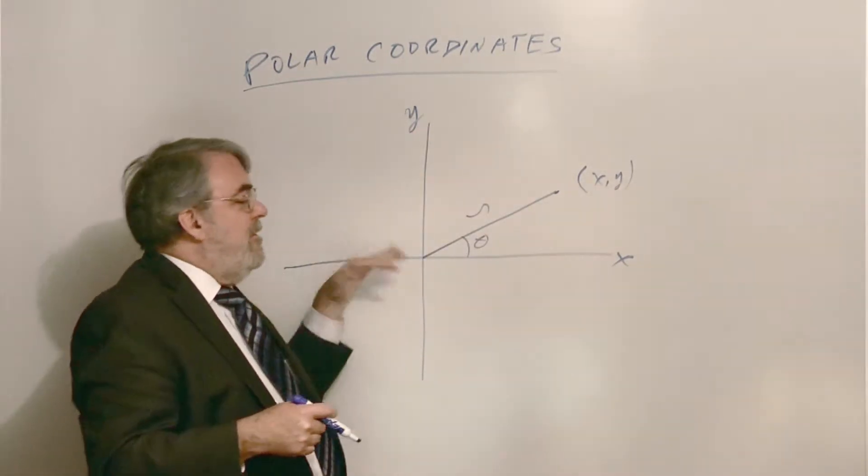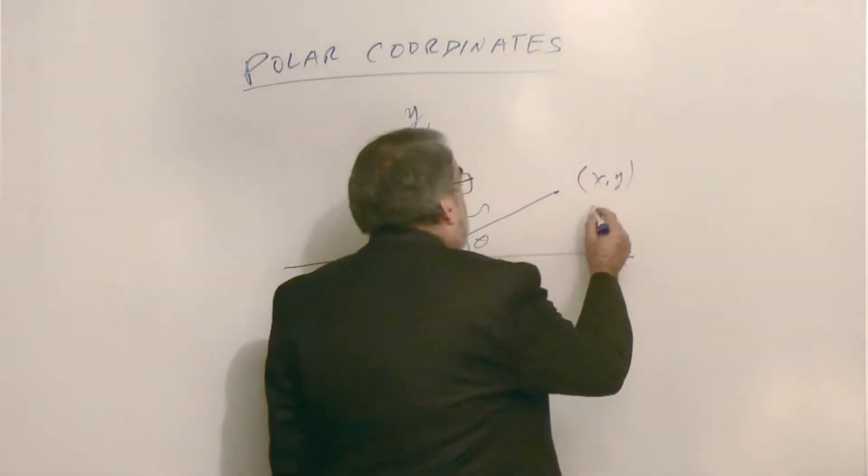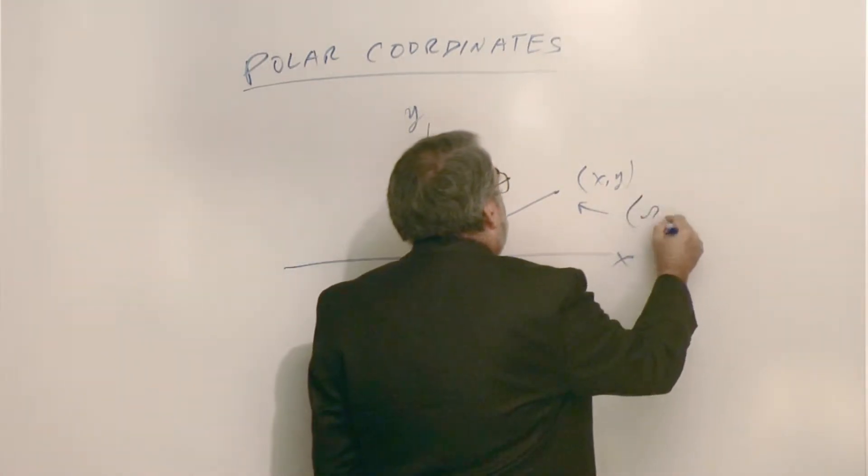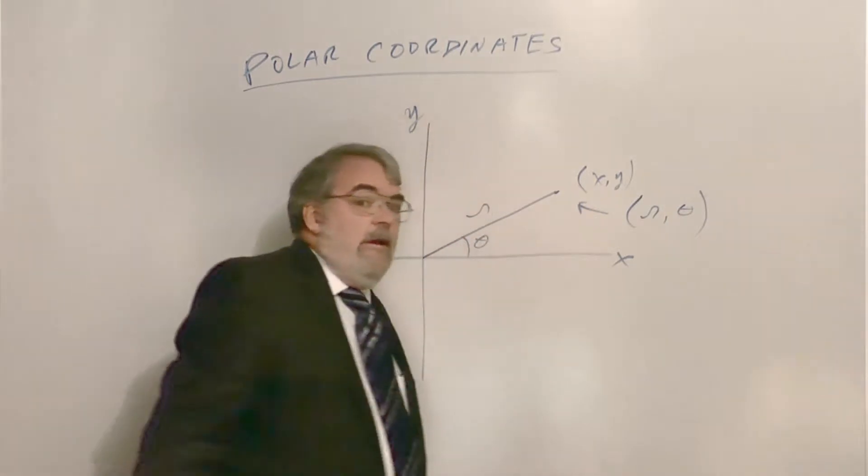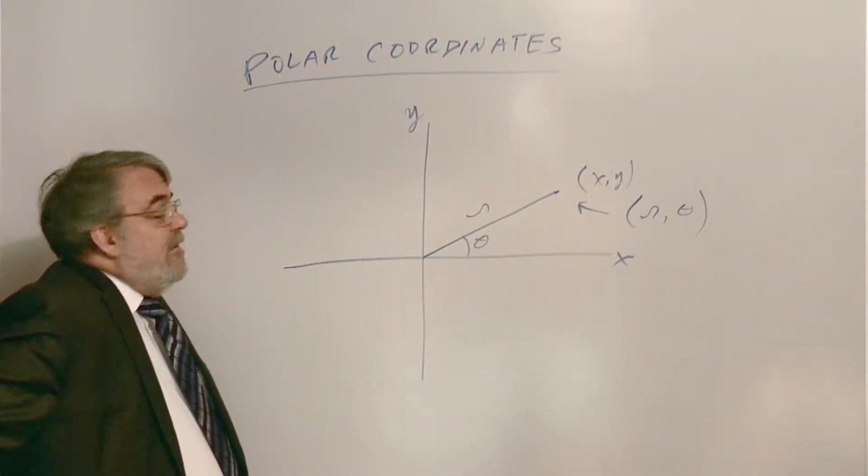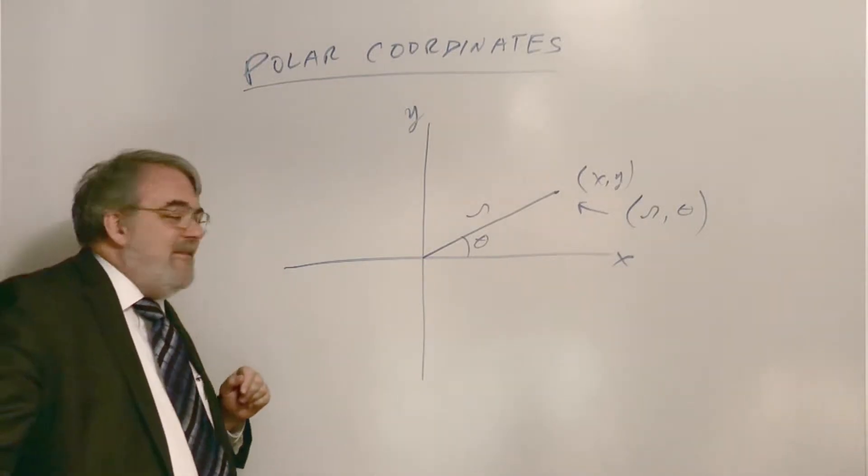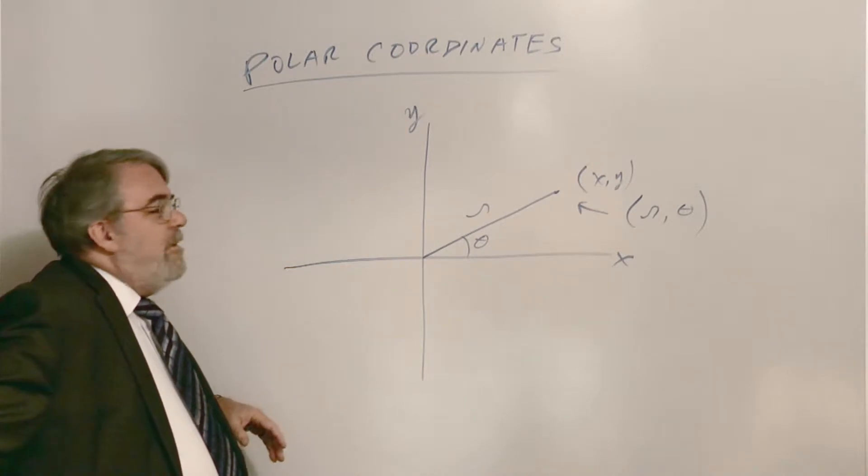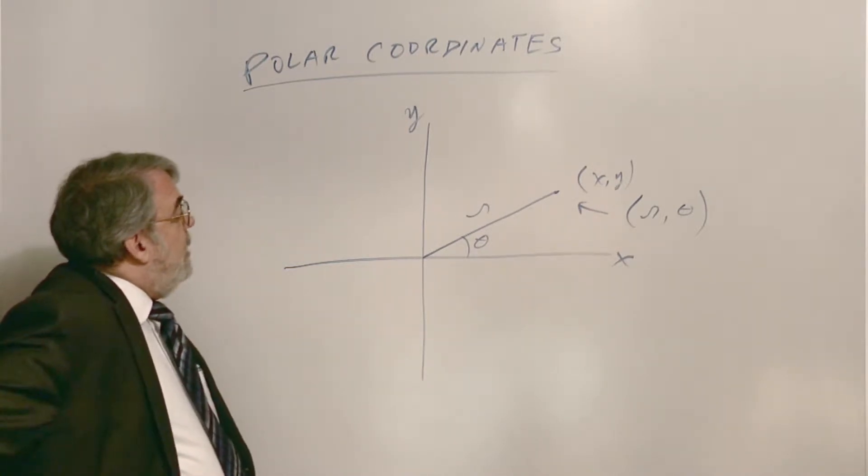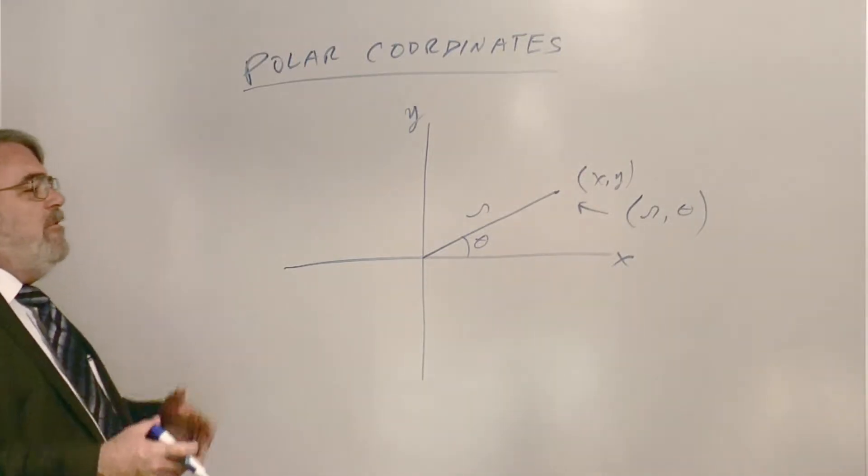So we can also define this point in terms of the radius or distance from the origin and the angle from the x-axis, or theta. That's polar coordinates. So to describe a point takes two pieces of information on a plane—where a point is. And so there you are: r and theta.